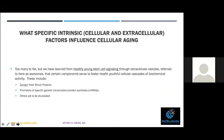What are the specific factors that deal with the difference in the rate of aging? We have learned from healthy young stem cell signaling through extracellular vesicles — referred to as exosomes — given off by these young stem cells, that certain components serve to foster healthy, youthful cellular biochemical cascades. These are cascades working against inflammation or working for DNA repair — they are the anti-aging pathways. These include certain heat shock proteins and promoters of specific genetic transcription and protein synthesis, as well as miRNAs found in exosomes.